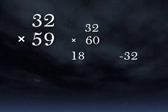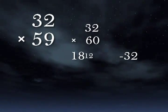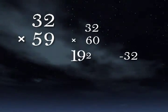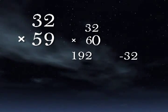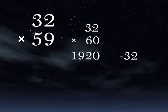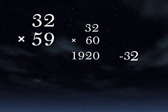32 times 6 is 192, which is to say 192 times 10. Tack on the 0. So 1920 minus 32.